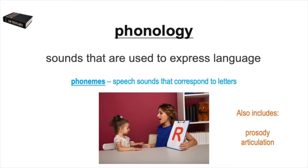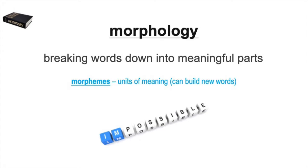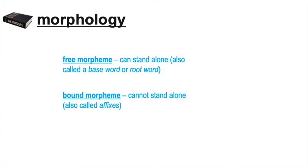Morphology is breaking words apart in order to study the structures that create the word's meaning. Those pieces of words are called morphemes — the smallest unit of meaning. Note that this is different from phonemes, which are units of sound; morphemes are units of meaning. There are free morphemes and bound morphemes. Free morphemes can stand alone — sometimes called base words or root words. Bound morphemes can't stand alone; these are called affixes, which include prefixes and suffixes.